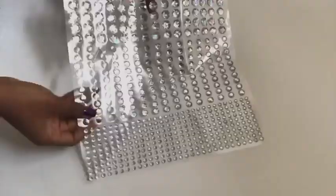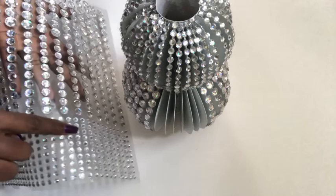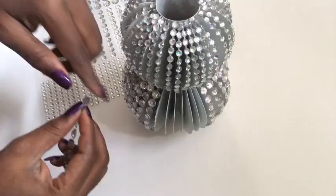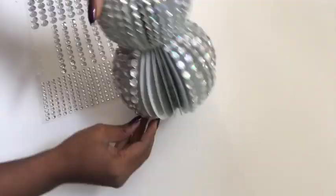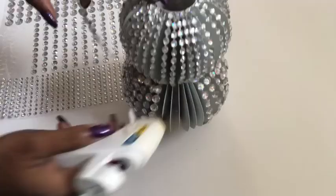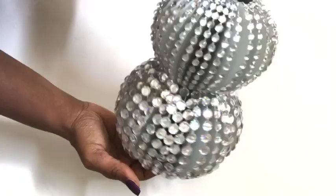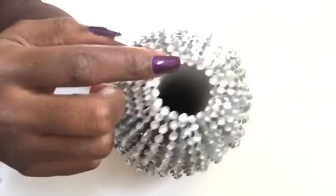For the smaller vase, I'm going to be using these self-adhesive gems that I got from Walmart. They come in different sizes. I will use the smaller sizes for the upper layer and then the mid sizes for the lower part of the vase. This is what it looks like.